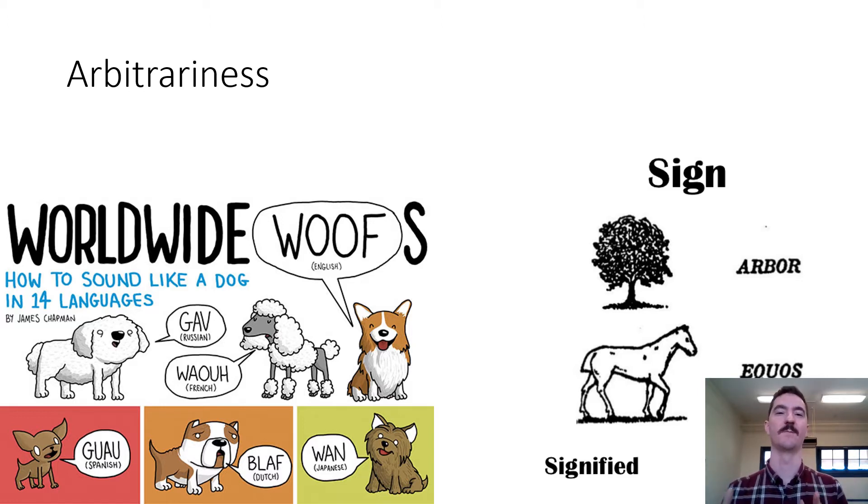Arbitrariness basically says that the words or the sounds that we match to objects are completely arbitrary. They have no real basis for link. The tree we call a tree from the Latin arbor, but we call it tree; other languages call it different things, so they're completely arbitrary.